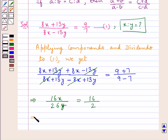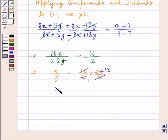From here we have x upon y is equal to 16 upon 2 into 26 upon 16. Now 16 cancels with 16 and 2 times 13 is 26. So we have x upon y is equal to 13 upon 1. Therefore we get x is to y is equal to 13 is to 1.